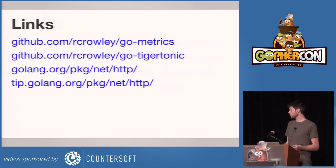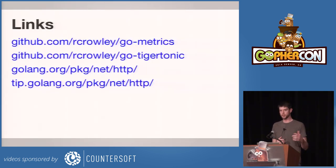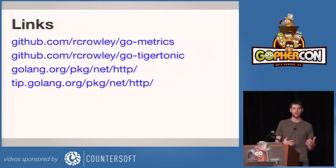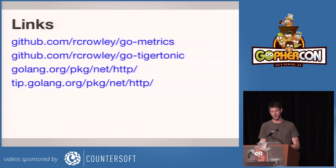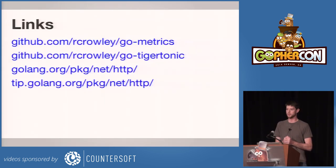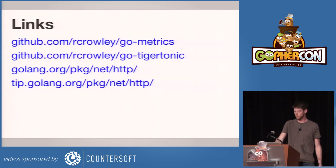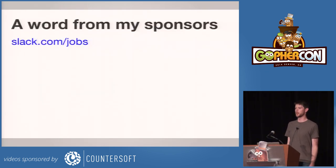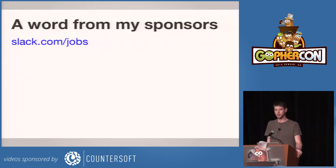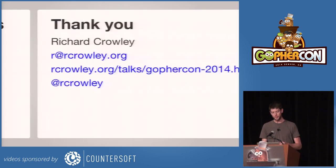Here are some links. Most of the code that I showed is open source, but the point is to think about web services in this compositional manner. The link at the bottom is to the tip docs that have the new Go 1.3 ConnState and related features in them. If you enjoy working on hard engineering problems with many thousands of long-lived concurrent connections, come talk with me. Thanks.